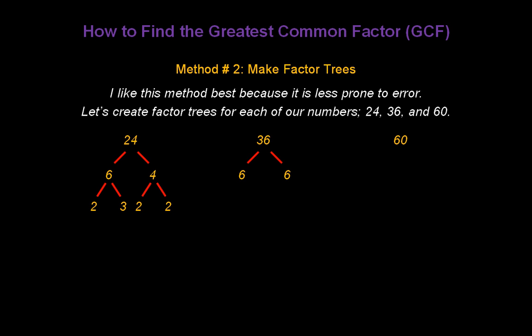36 breaks down into 6 times 6, and both 6's break down to 2 times 3. Then I'll factor 60 by breaking it down into 6 times 10. The 6 breaks down into 2 times 3, and the 10 breaks down into 2 times 5.